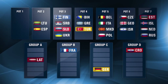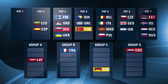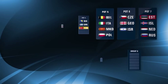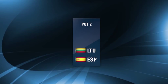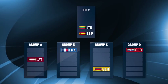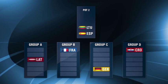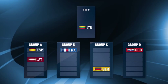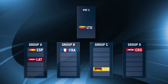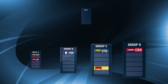The remaining six pots will now be drawn as normal with a selected country going to the next available place on their seeded line. For Pot 2, Lithuania and Spain are the remaining first seeded countries to be selected. For example, if Spain is selected first it will go to Group A, and Lithuania therefore completes the first seedings by going to Group C.